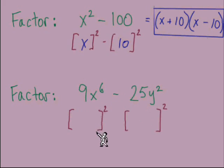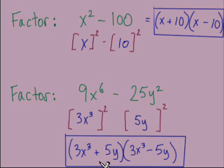This second example, again, two terms that are squares. In the first box we have 3x to the third, and the second box has 5y. Dropping those into parentheses, we have 3x to the third plus 5y and 3x to the third minus 5y.